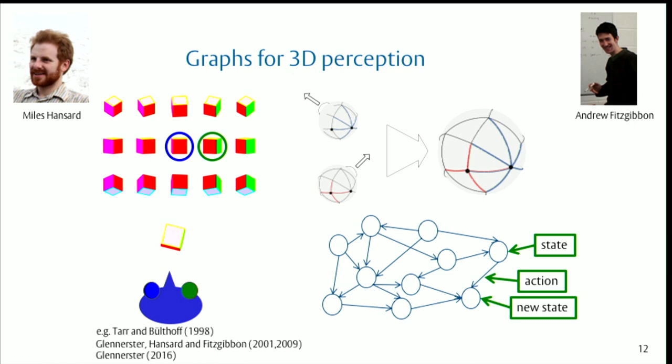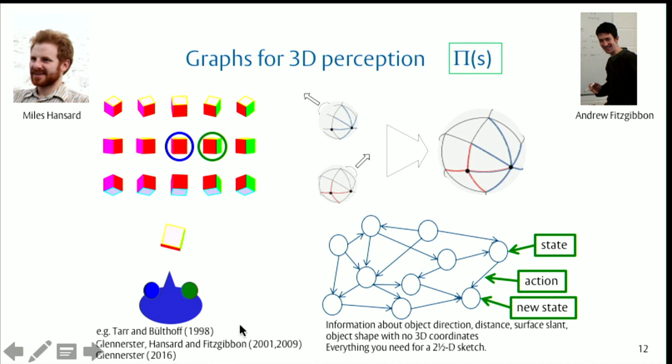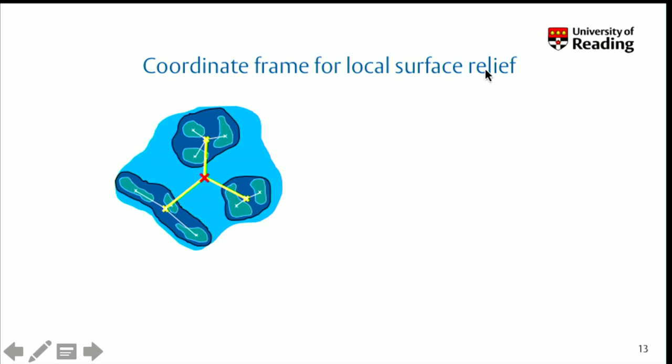This is work I did with Myles Hansard and Andrew Fitzgibbon — you can read more about that if you want. In the reinforcement literature, this graph of actions is just called a policy network.